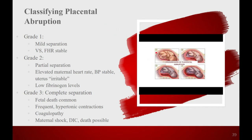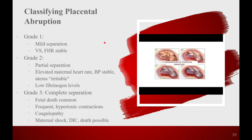Classifying placental abruption: grade zero has no symptoms — maybe a corner of the placenta lifts up, but nothing else has happened. Grade one: you can see a small area where a corner has lifted and is bleeding. It's a very vascular organ meant to perfuse an entire human being. At grade one, symptoms are mild, mom's vital signs are stable, and baby's heart rate is stable at the moment — but if it goes anywhere else, we're in trouble.